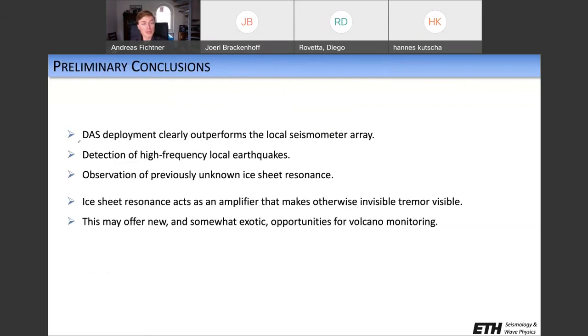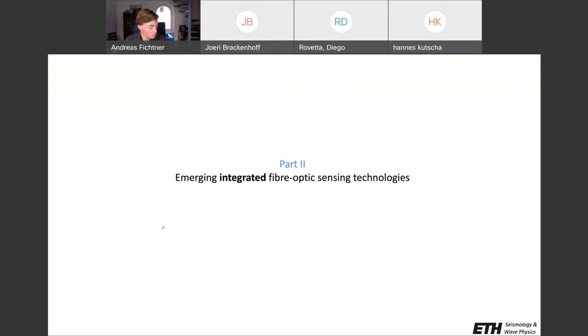And the result of those driving forces in the time frequency domain are what you see here. So we have frequency on the y-axis, the days from the beginning of the experiment on the x-axis. And what we see is the spectral amplitude of the effective forces. And you see that low frequency sources that are not ambient noise are basically present all the time. Sometimes they're a bit stronger, sometimes they're a bit weaker. And we think that what we actually observe here is volcanic tremor, continuous volcanic tremor that is related to geothermal activity. So again, here are some preliminary conclusions. We saw that the DAS deployment very clearly outperforms the local seismometer network, when it comes to the detection of high-frequency earthquakes, but also when it comes to the observation of this previously unknown ice sheet resonance. This resonance, interestingly, acts as an amplifier of a signal that otherwise would not be visible. So this tremor really becomes visible because we have this amplifier, this natural amplifier. And we think that this might actually offer interesting opportunities for somewhat exotic monitoring of volcanoes that have a similar setting, so an ice sheet floating on top of a subglacial lake.